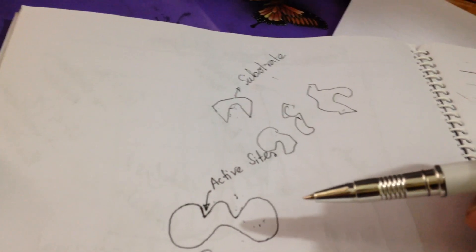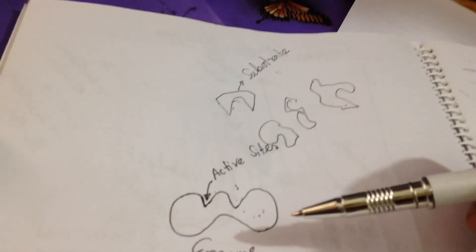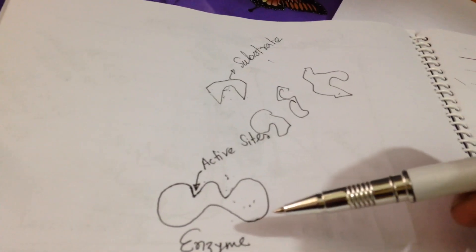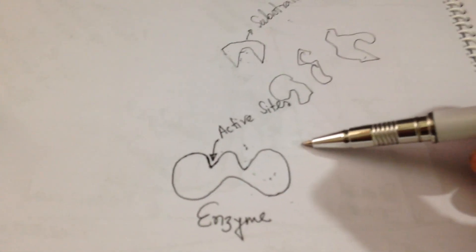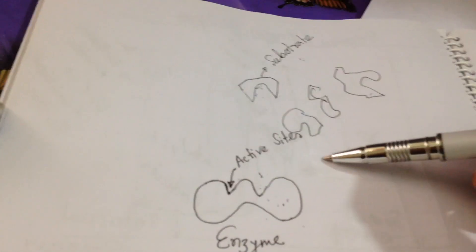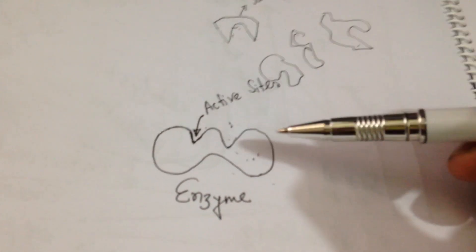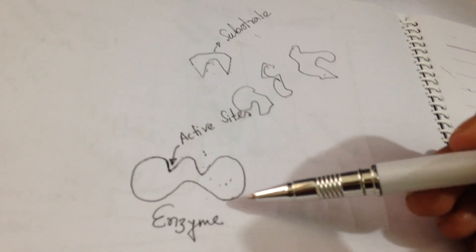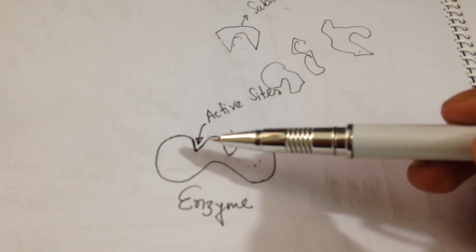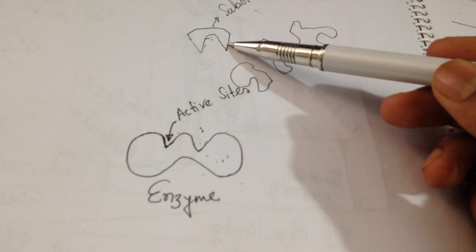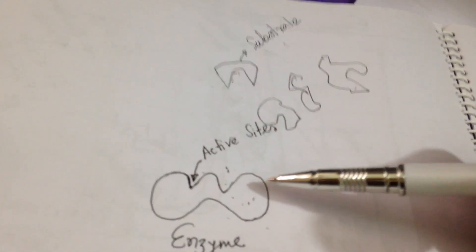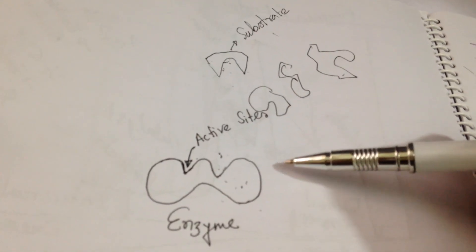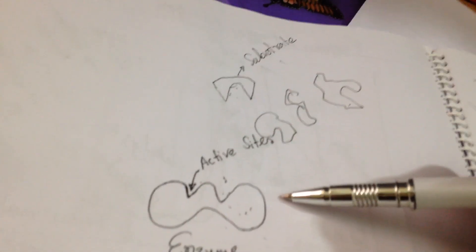Enzymes are basically biocatalysts and they help the reactant or substrate to bind onto them to initiate the reaction. The branch of chemistry which deals with the rate of reaction is known as chemical kinetics. The part of biochemistry which deals with the rate of conversion of product from reactant through the active sites of the enzyme is known as enzyme kinetics.